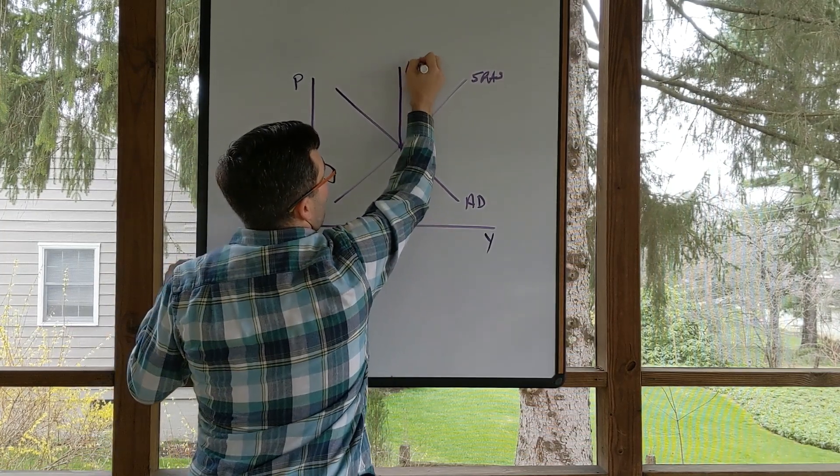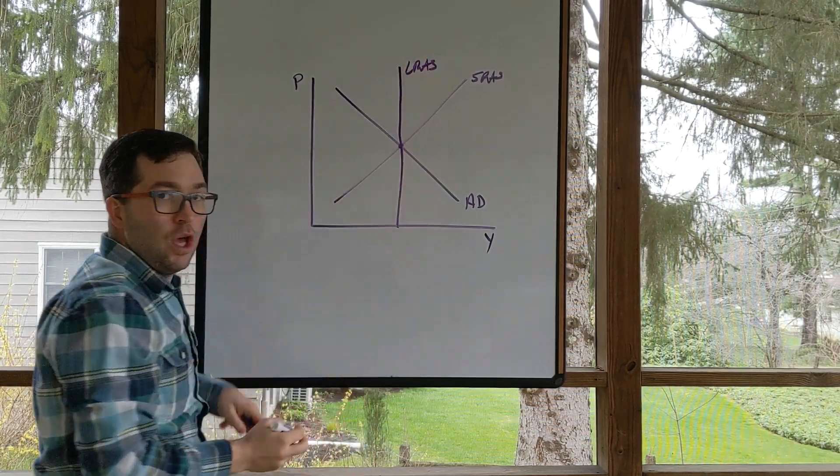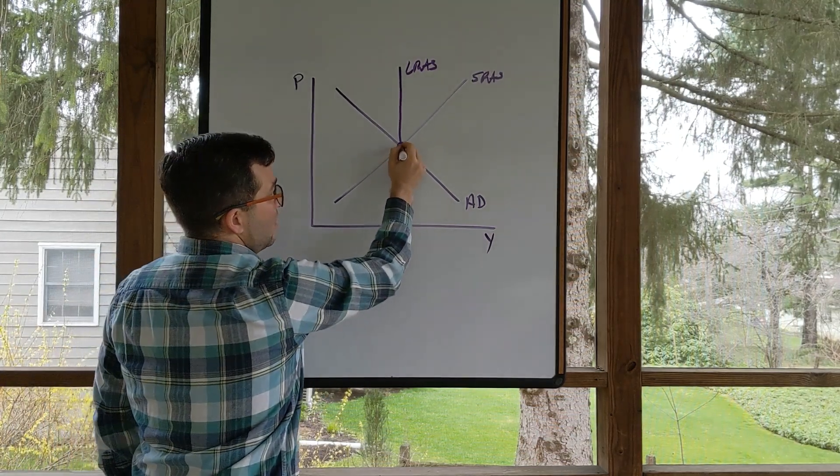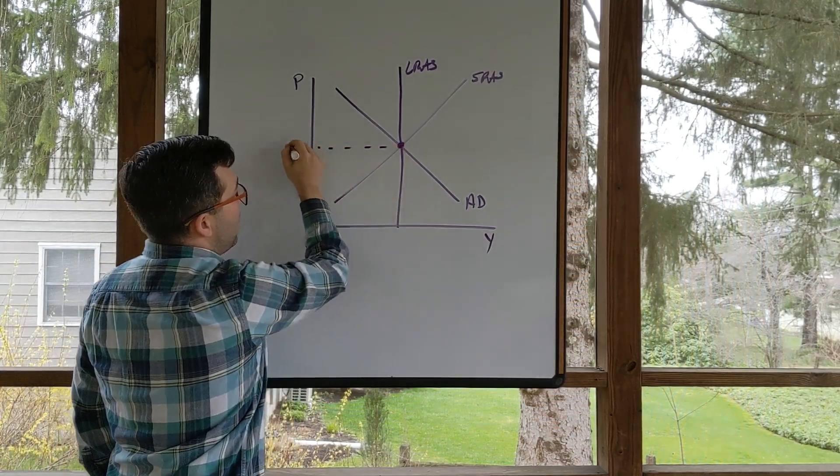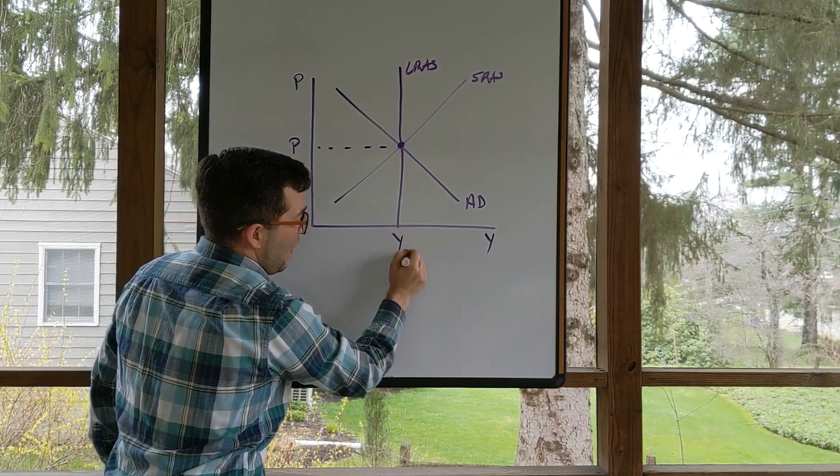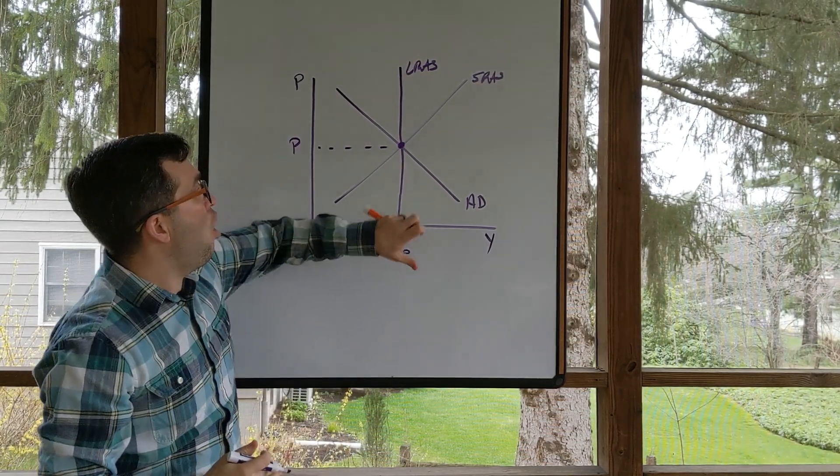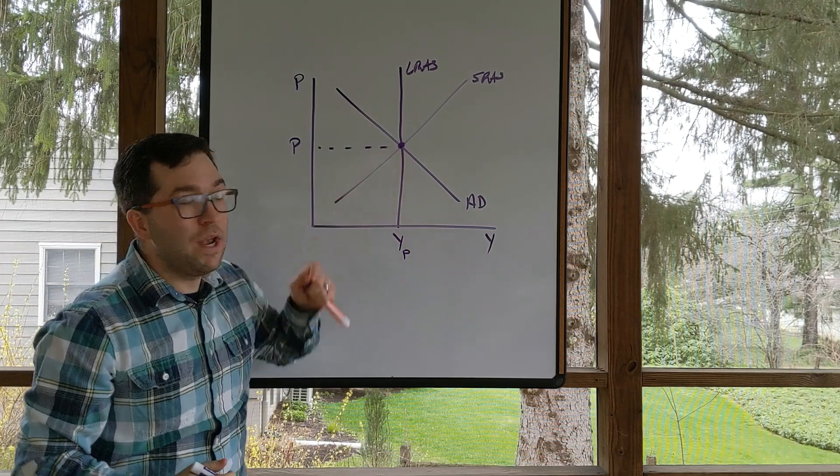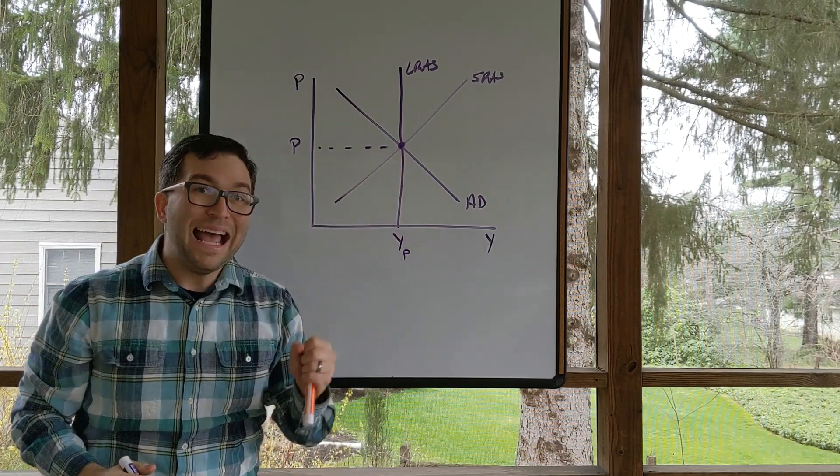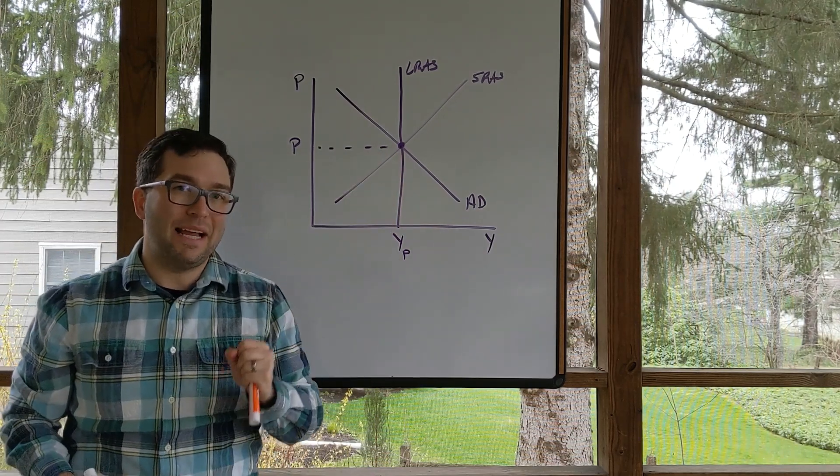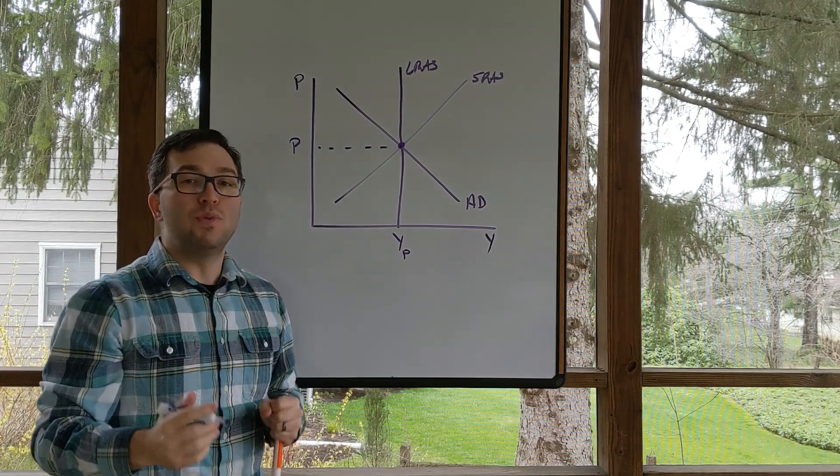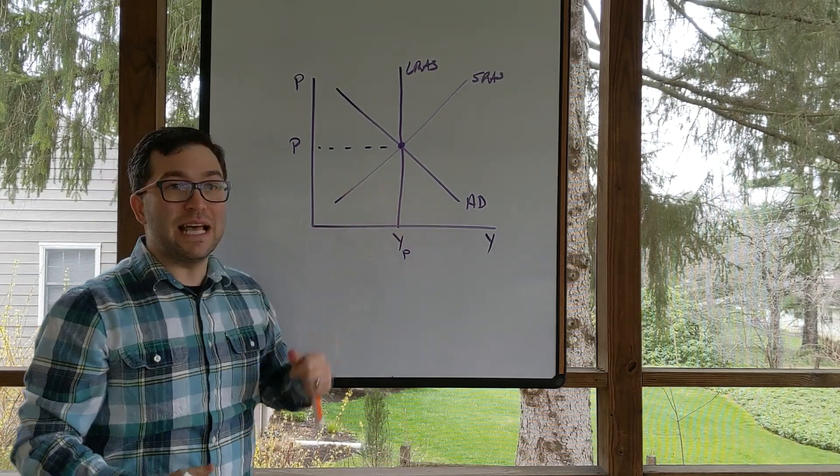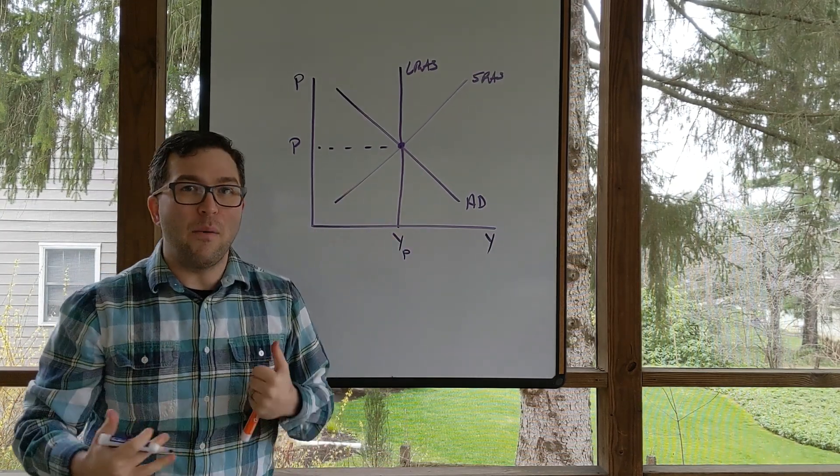Long-run aggregate supply, when all three of these cross, we will have the price that gives us our potential GDP. All of them are in one equilibrium point. That is the long-run macroeconomic equilibrium. What we'll do is we'll explore some things that move this out of long-run equilibrium and how we adjust back.